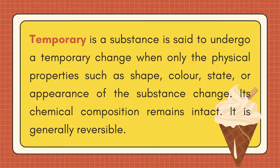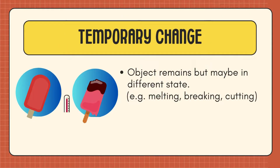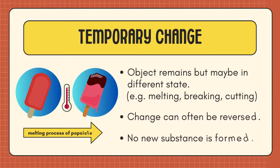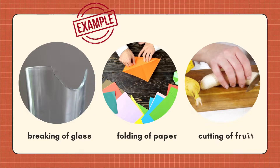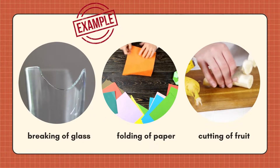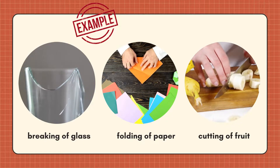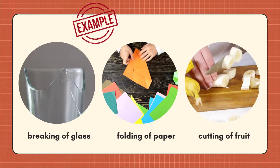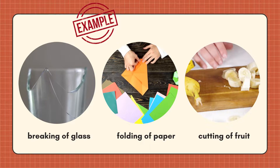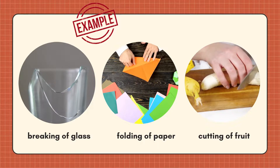A temporary change is generally reversible. Its characteristics include: it is temporary in nature; the object remains but may be in a different state; examples include melting, breaking, cutting, and folding. It does not affect the internal structure of a substance — only the molecules are rearranged. Most temporary changes are reversible, meaning we can obtain the substance back even after the change, and no new substance is formed.